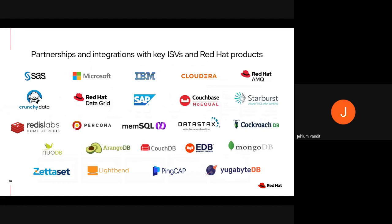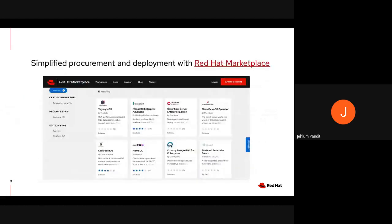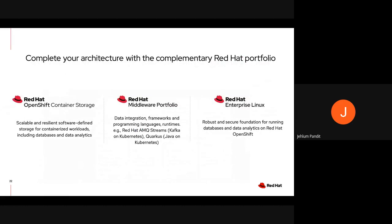You can integrate your databases with data analytics products like Red Hat AMQ Streams and Data Grid on OpenShift to not only store your databases but also enable agile analytics. Red Hat Marketplace simplifies the process of acquiring and deploying databases and data analytics software on OpenShift. Red Hat's storage portfolio includes Red Hat OpenShift Container Storage and Red Hat Ceph Storage, providing software-defined storage capability for containers and helping address petabyte-scale storage requirements.